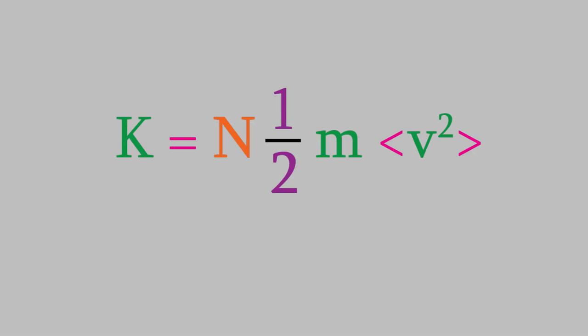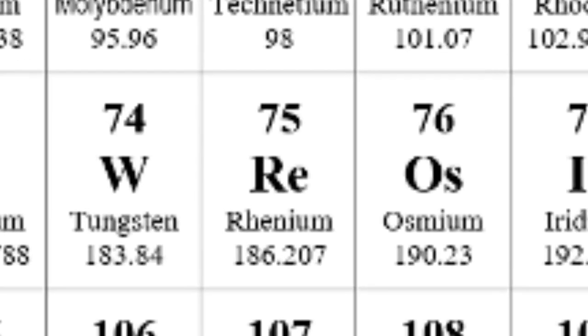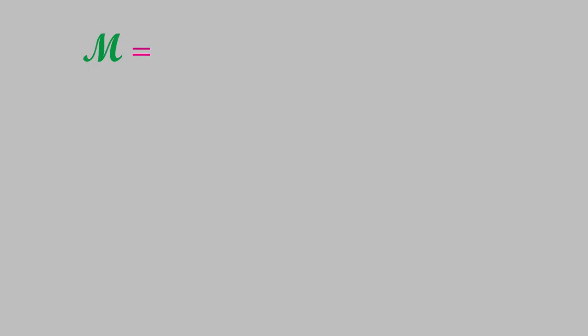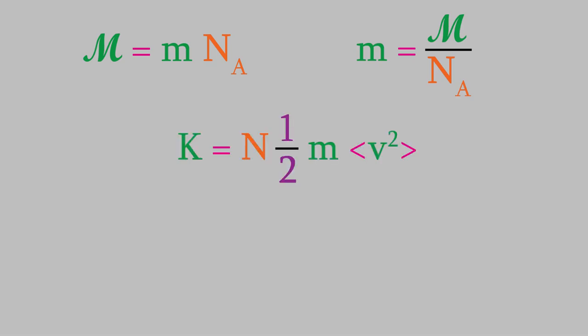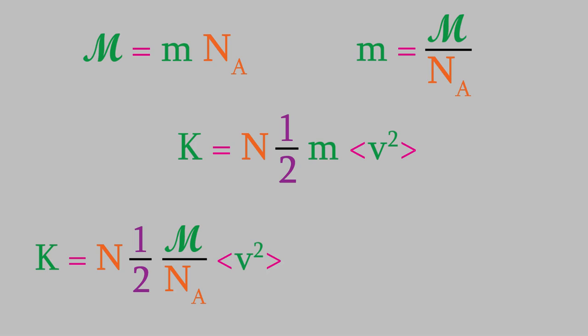Here is the first equation we had for kinetic energy. Besides velocity, it also has m — the mass of one molecule. It's not easy to measure the mass of one molecule, but we can look up the molecular mass on the periodic table. The molecular mass, given the symbol script M, is equal to the mass of one molecule times Avogadro's number Na. Solving for the mass of a molecule and substituting into our kinetic energy expression, and noting that n divided by Avogadro's number equals the number of moles, we simplify to get a new equation.